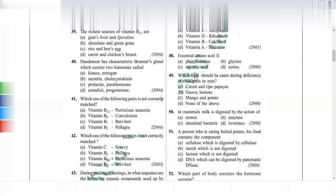Which food should be eaten during a deficiency of rhodopsin in the eye? Rhodopsin deficiency means vitamin A deficiency. The correct answer is carrot and ripe papaya, as they contain more carotene, which provides vitamin A — retinol.